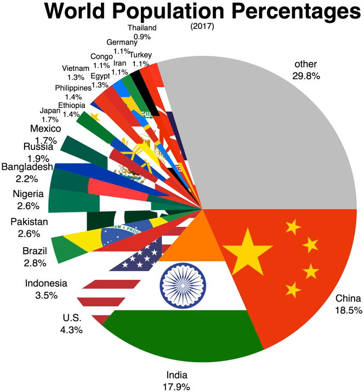This is a list of countries and dependent territories by population. It includes sovereign states, inhabited dependent territories and, in some cases, constituent countries of sovereign states, with inclusion within the list being primarily based on the ISO standard ISO 3166-1.